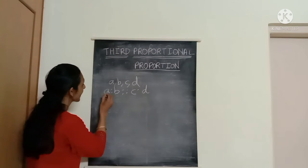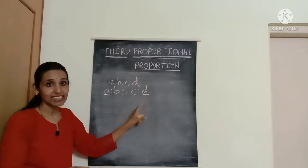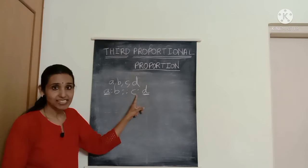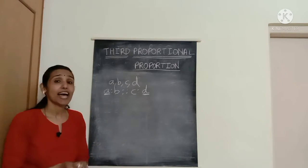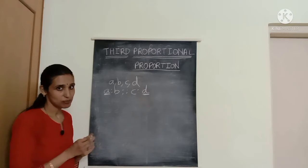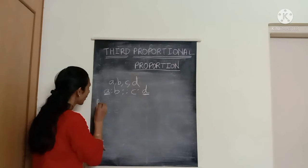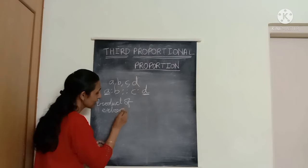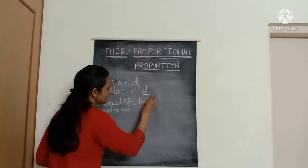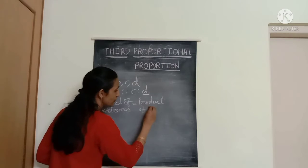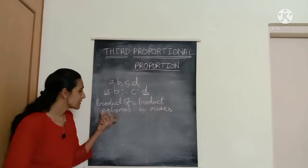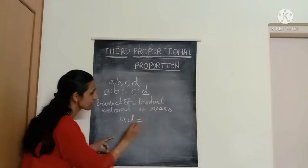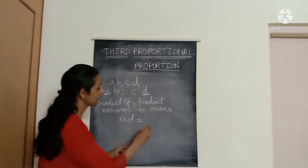One more point to notice: the terms A and D are at the ends, so they are known as the extremes, whereas B and C are in the middle and are known as means. The rule in proportion is that the product of extremes is equal to the product of means — that is, A multiplied by D equals B multiplied by C.